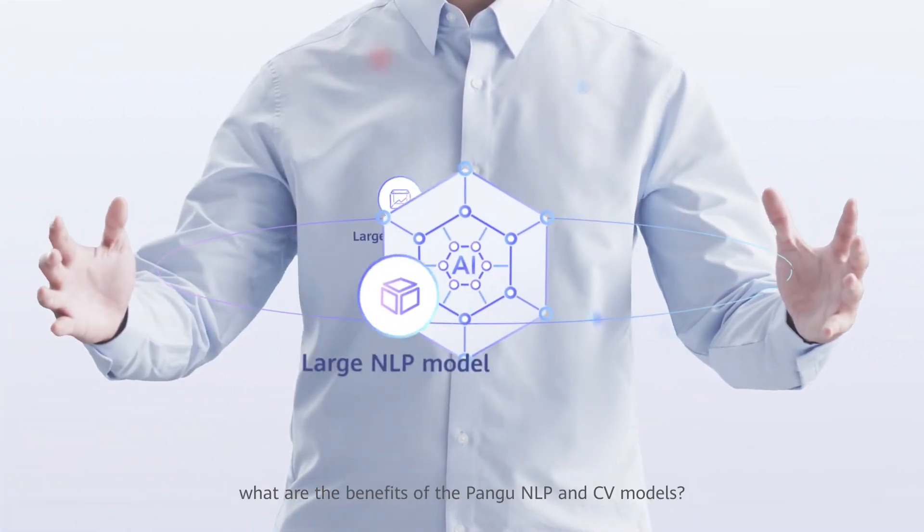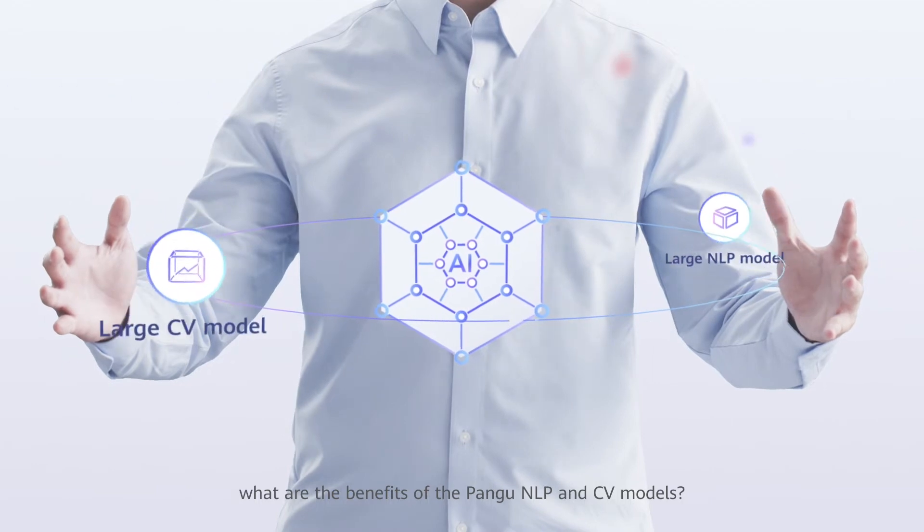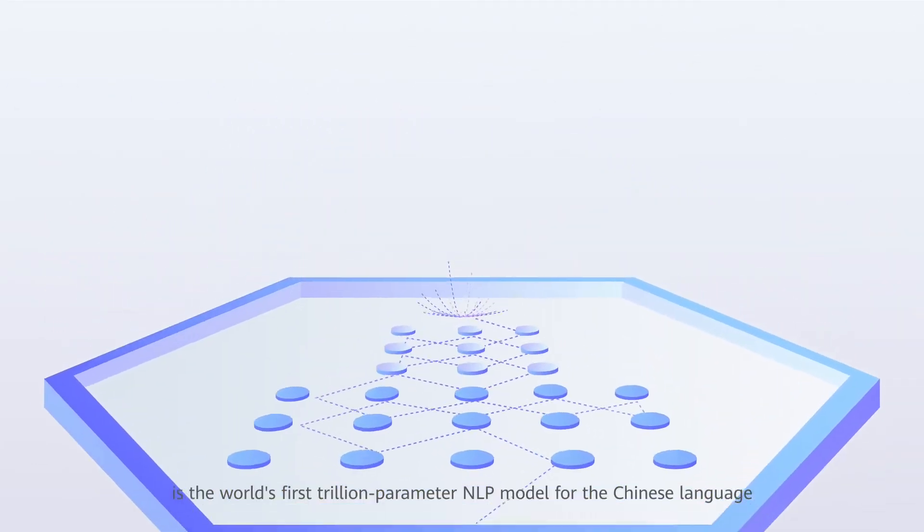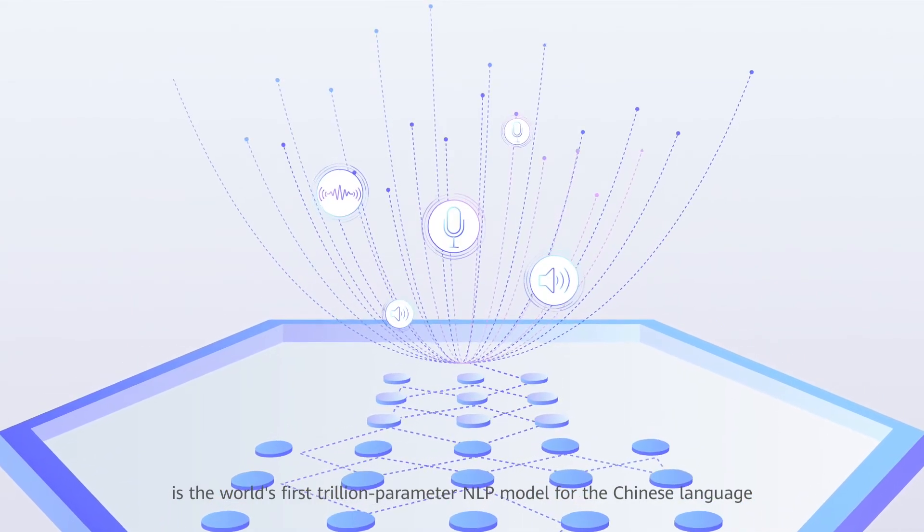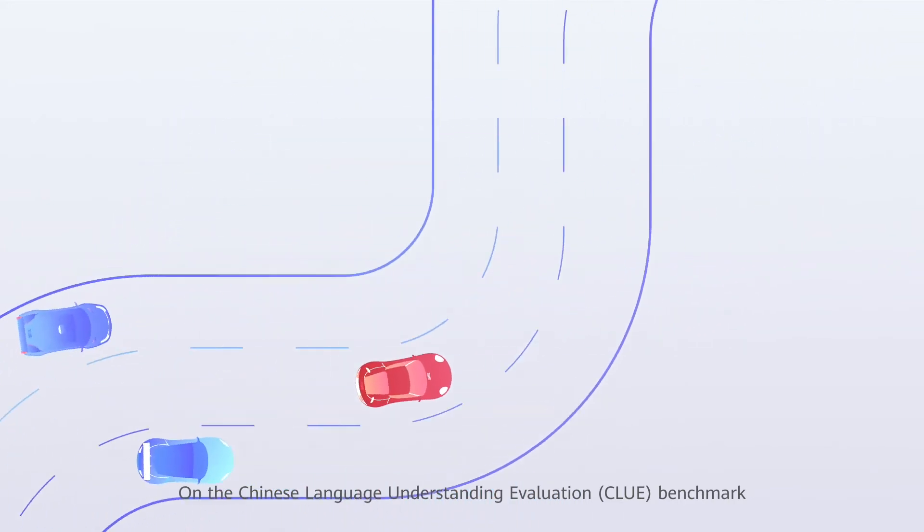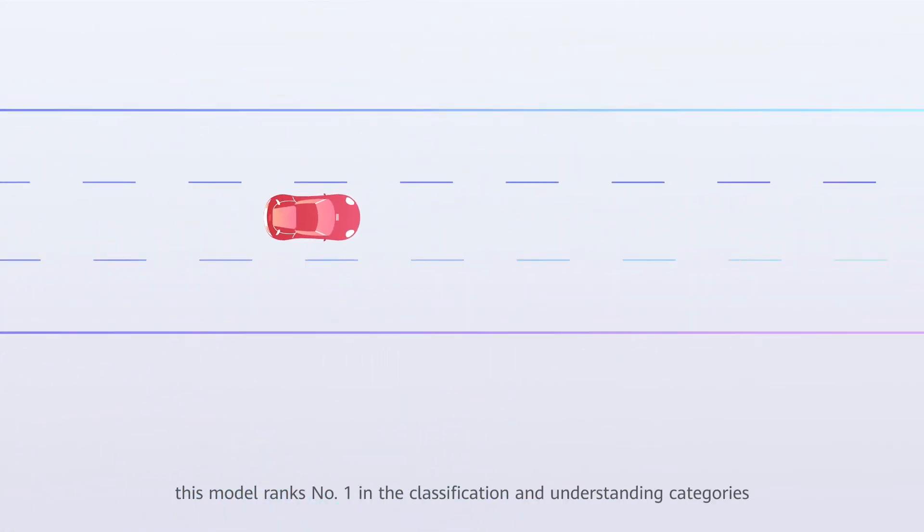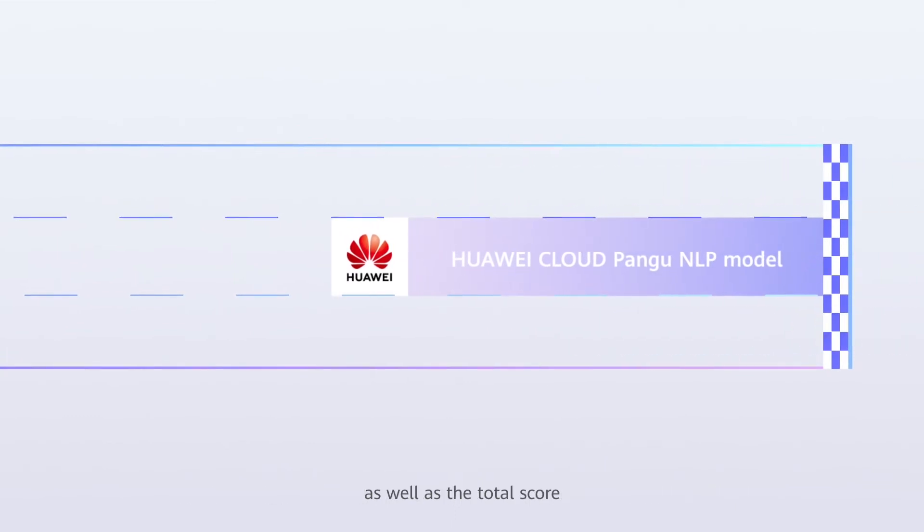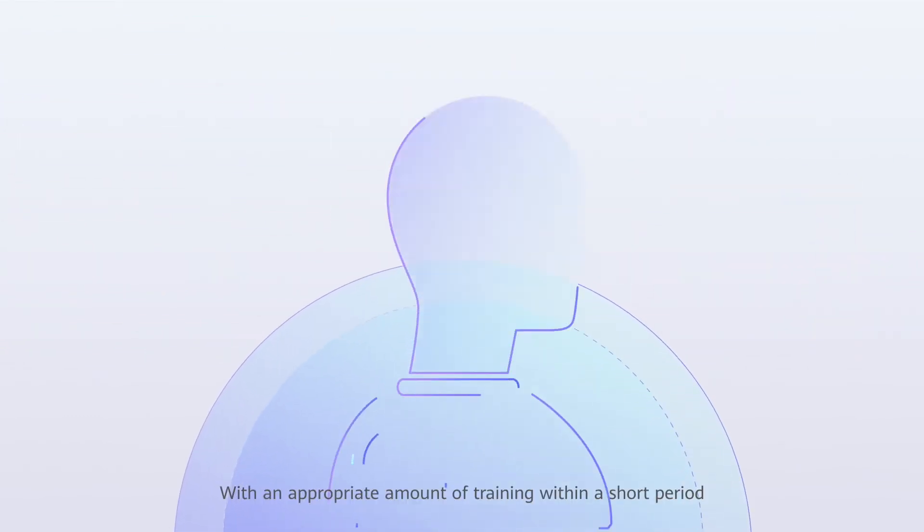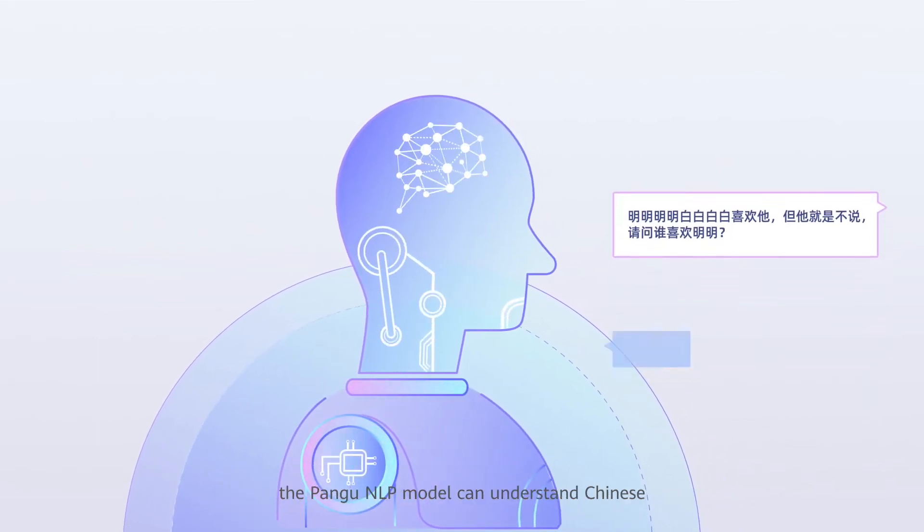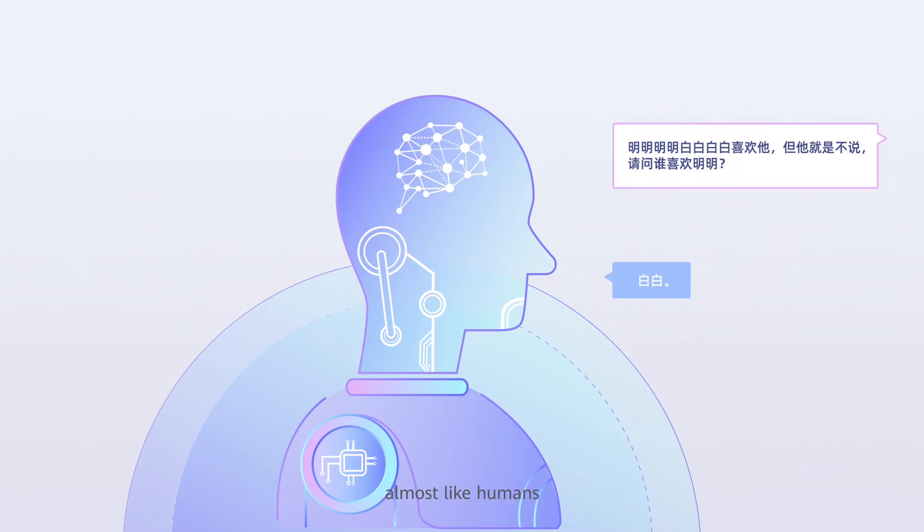In practice, what are the benefits of the Pangu NLP and CV models? The Huawei Pangu model is the world's first trillion-parameter NLP model for the Chinese language. On the Chinese Language Understanding Evaluation (CLUE) benchmark, this model ranks number one in the classification and understanding categories, as well as the total score. With an appropriate amount of training within a short period, the Pangu NLP model can understand Chinese almost like humans.